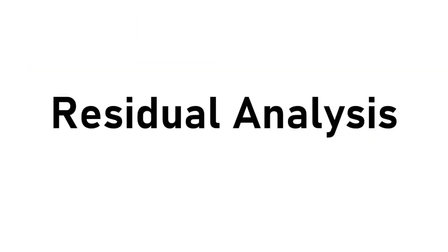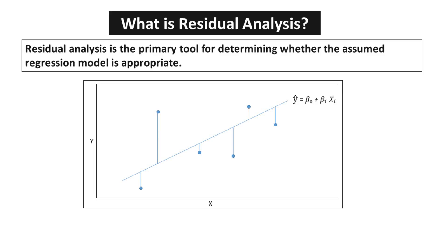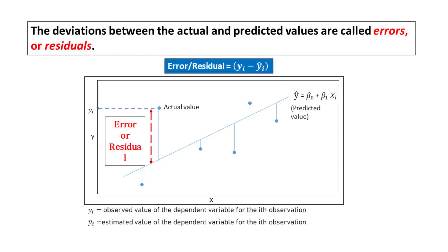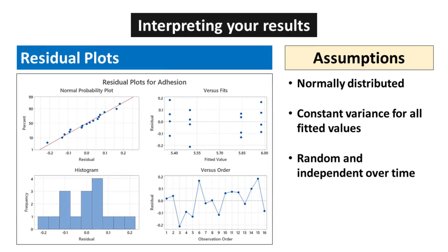Residual analysis is a crucial tool in regression analysis that allows researchers to assess the validity of their assumed regression model. Errors, or residuals, refer to the discrepancies between actual and predicted values. These residuals are used to assess goodness of fit, identify patterns in the data, and detect potential outliers. The assumptions of residual plots are: residuals should be normally distributed, residuals should exhibit constant variance (homoscedasticity), and there should be no pattern in the residuals.